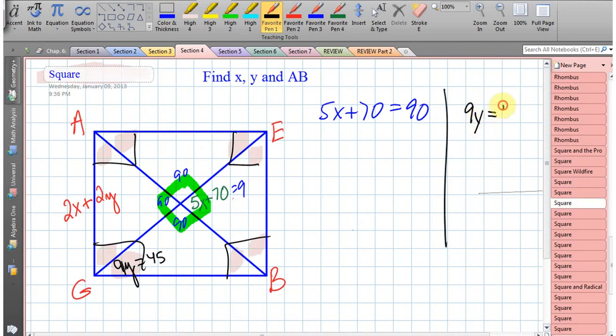Meaning we are going to have 9y = 45. So let's find x and y. How do we do that? Well let's see, we put the 70 on the other side, so we got 5x = 20. Turns out x is 4. Over here on the other side we got y = 5.